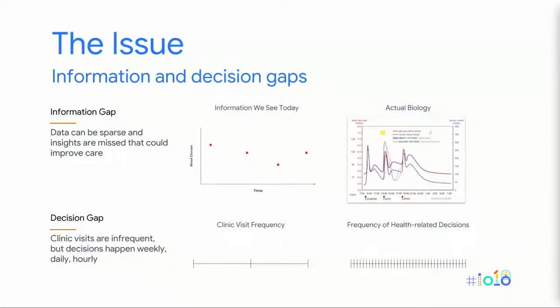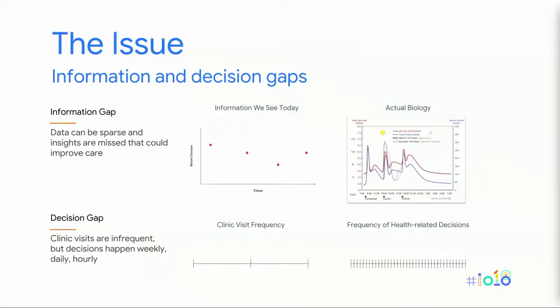We have two main issues we're trying to address. The first is an information gap. Even the most adherent patient with diabetes would check blood sugar four times a day — but biology is happening all the time. When I see patients in the hospital, I can see heart rate and blood pressure in real time, but then people go home and biology is still happening. The second issue is a decision gap. You may see a care provider once or twice a year, but health decisions are happening every single day — weekly, daily, hourly.